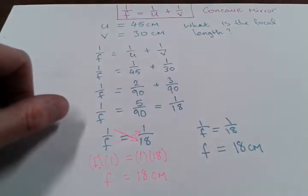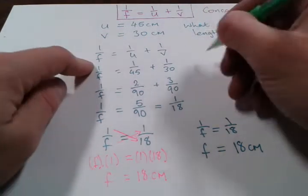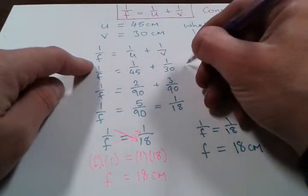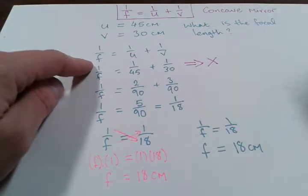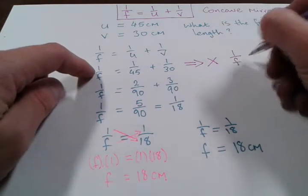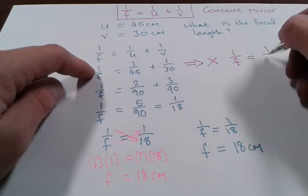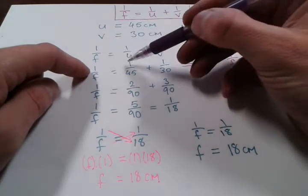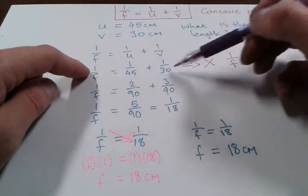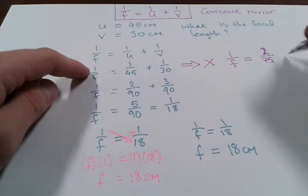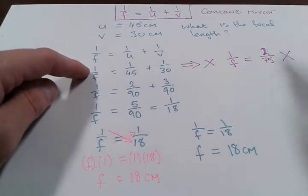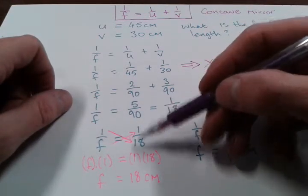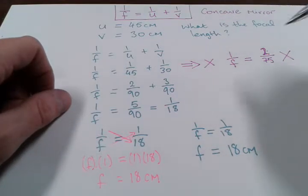A couple of common mistakes that people make with this question: do not do this. A lot of people get to here and they will write 1 over F equals 2 over 75, and where this would come from is they would say 1 and 1 is 2, and 45 and 30 is 75. And that is incorrect. That's not the way that you add fractions. You have to get a common denominator, or if you just put this into your calculator, you will end up with the answer 1 over 18.